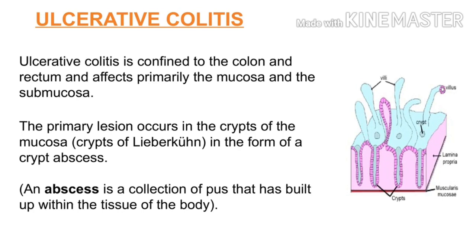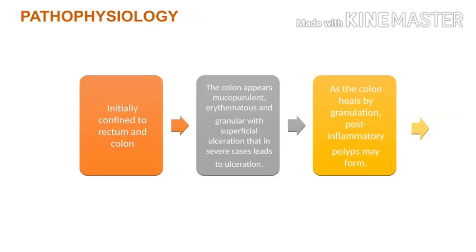If you have a primary lesion, you will see crypt abscess. What are we going to do with pathophysiology? First of all, we are going to put the colon in the rectum. The colon is mucopurulent, so it is superficial. Then there is ulceration. So the colon heals, and that is why it produces post-inflammatory polyps.